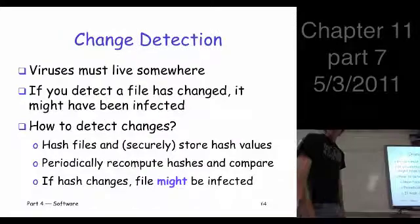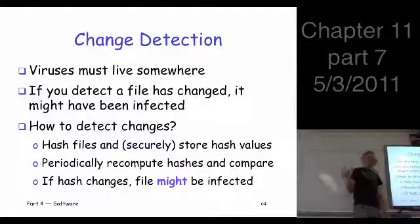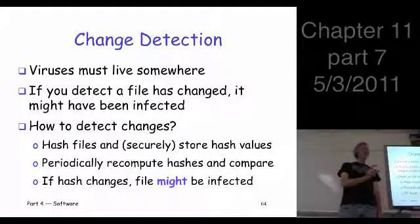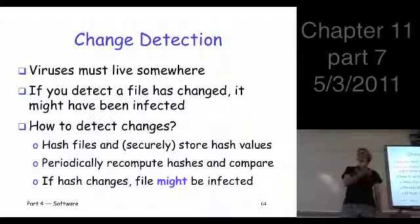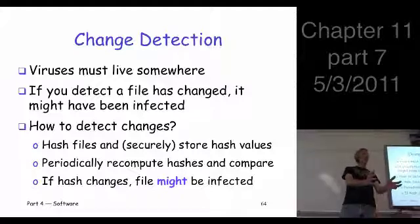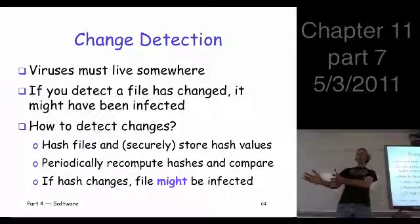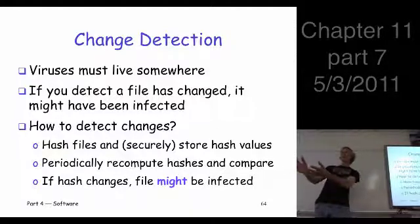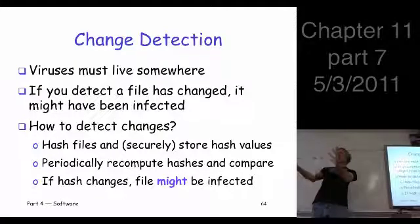So what's an alternative? An alternative actually used in some products is called change detection. The idea is: your system gets infected with some malware, something has changed because of that — there are some bits now on your system that were not there before. If it's a traditional virus, it's embedded itself in some other code, and that code has changed. If it's a worm, it's a standalone thing — something's changed. No matter where it's hiding, there are some bits there that were not there before.